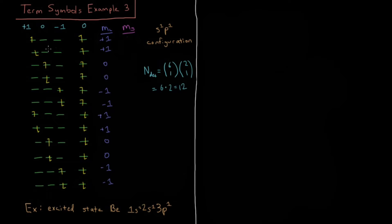Then for m sub s, add a half every time you have a spin up electron, subtract a half every time you have a spin down electron. So up, up is plus 1, down up is 0. That pattern repeats twice. Then we have up, down is 0, down, down is minus 1, and that pattern repeats twice.